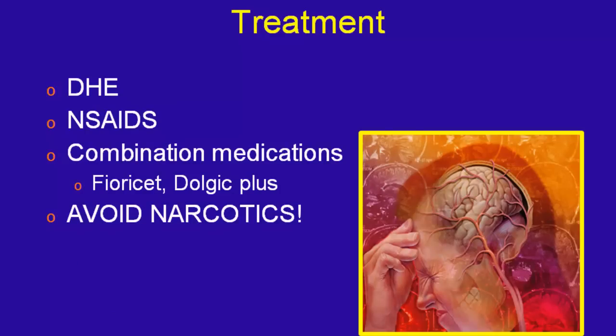DHE is very good in the ER setting, though we don't use it as much as we should. To dose DHE: pretreat with Reglan or another antiemetic because it's very nauseating, then 30 minutes later start with 0.5 mg of DHE. If tolerated, go up to 1 mg, then 1 mg every eight hours. Most people say dose for three days or until the headache goes away — maximum of eight to eleven doses. NSAIDs — pick your poison, it doesn't matter which one. Some people respond differently. IV Toradol is wonderful, very helpful around the clock.